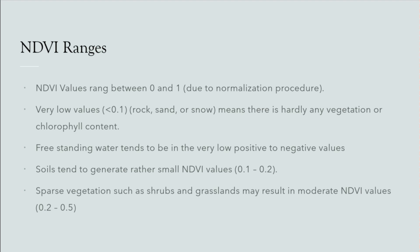The NDVI ranges are important and we'll look at these in our lab exercise for the SAVI indices as well. NDVI ranges between 0 and 1 due to the normalization procedure. Very low values less than 0.1 — rock, sand, or snow — means there is hardly any vegetation or chlorophyll content. Free-standing water tends to be in very low positive to negative values. Soils tend to generate rather small NDVI values of 0.1 to 0.2. Sparse vegetation such as shrubs and grasslands may result in moderate NDVI values of 0.2 to 0.5.